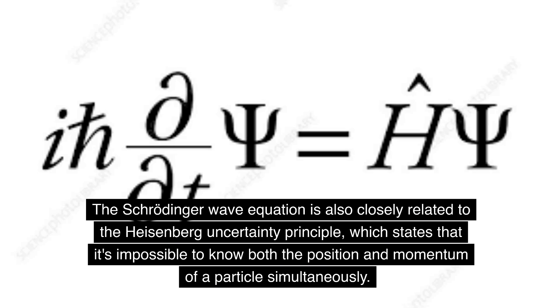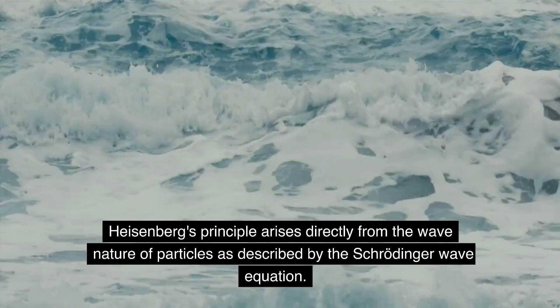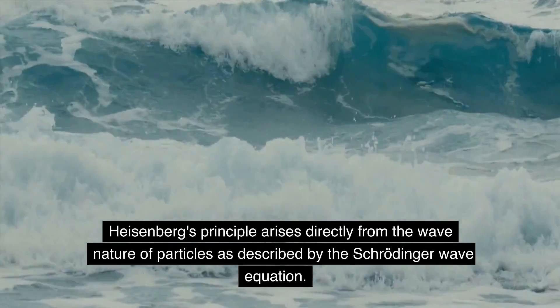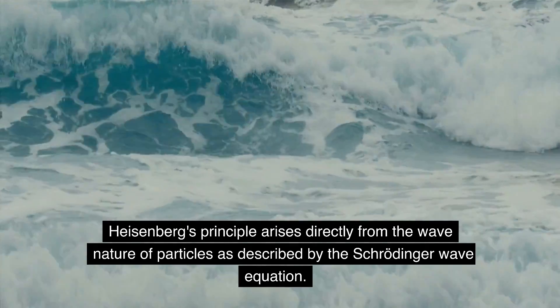The Schrödinger wave equation is also closely related to the Heisenberg uncertainty principle, which states that it's impossible to know both the position and momentum of a particle simultaneously. Heisenberg's principle arises directly from the wave nature of particles as described by the Schrödinger wave equation.